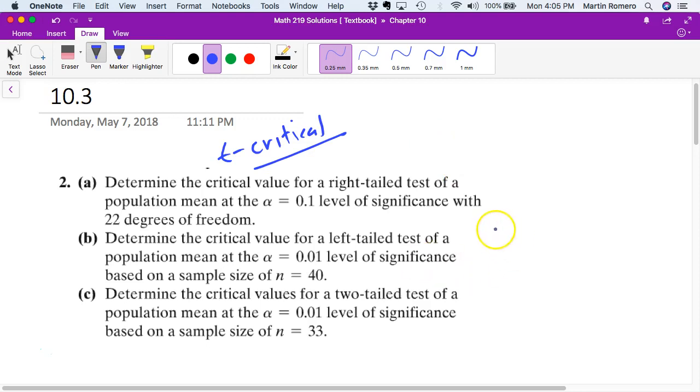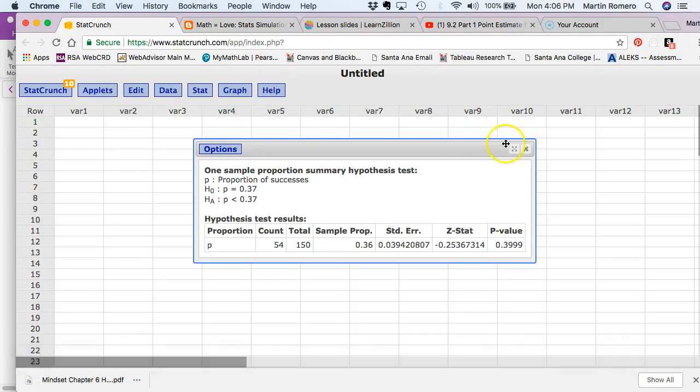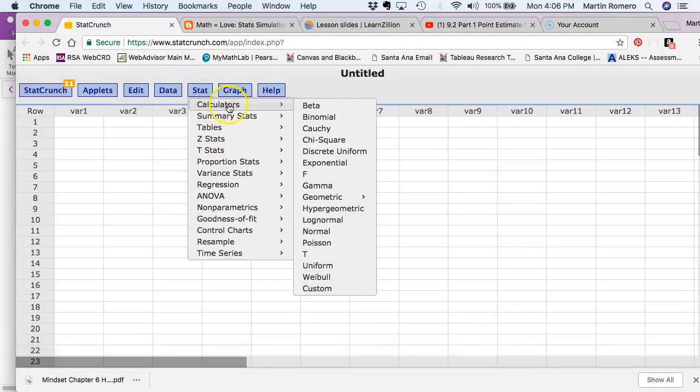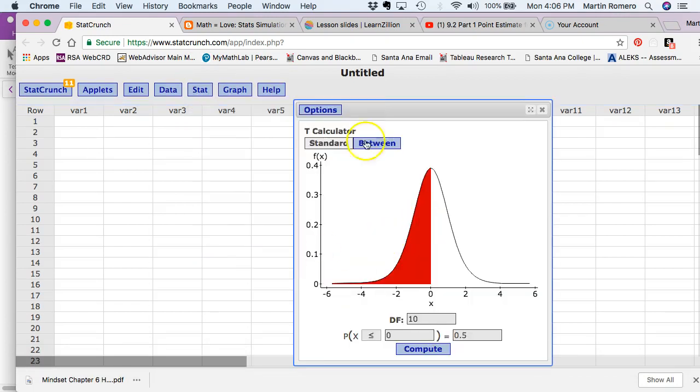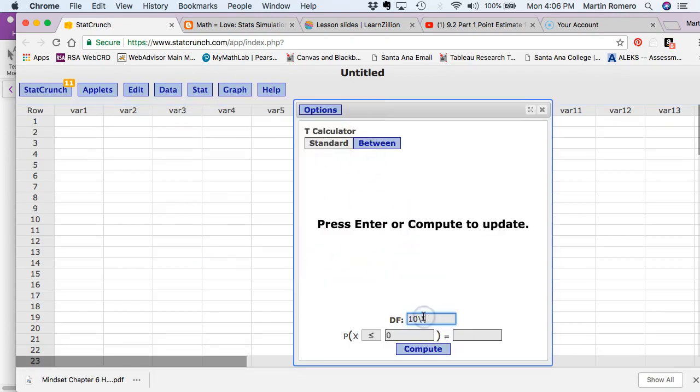So let's draw one out here, a right-tailed test. We're looking over here for the critical T value where alpha equals 0.01. In this case we also know your degrees of freedom are equal to 22. So we're looking for the critical T here where alpha is 0.01 on that side there. Let's go ahead and stat calculator T calculator. And in this case here, degrees of freedom for number two were 22.